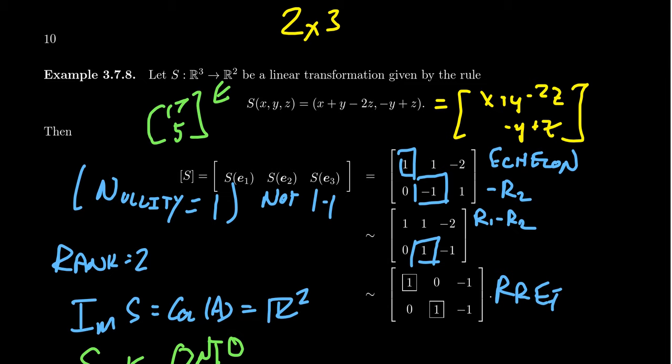This is why square matrices are the sweet spot — the Goldilocks of linear algebra: not too many rows, not too many columns. Those are the functions which could be bijective, that is both 1-to-1 and onto.